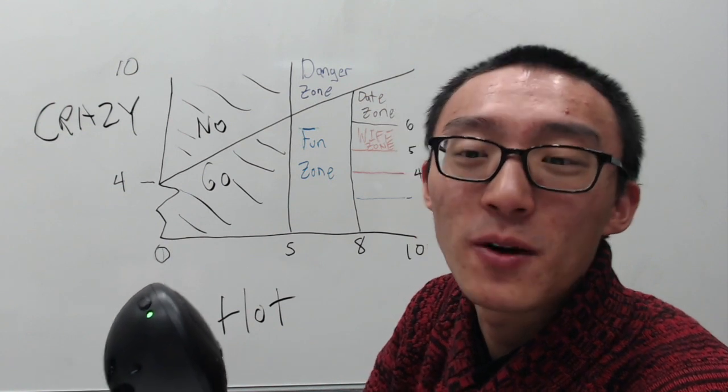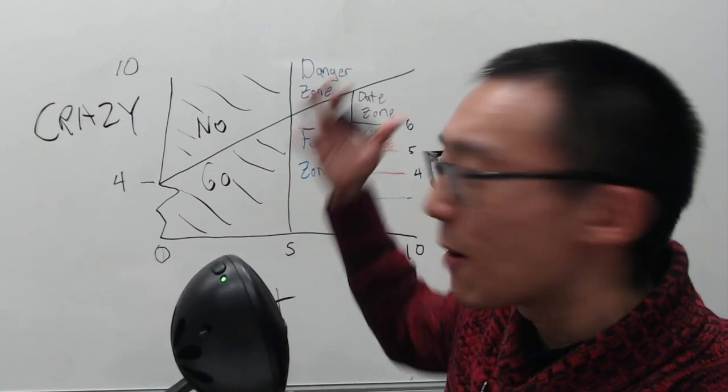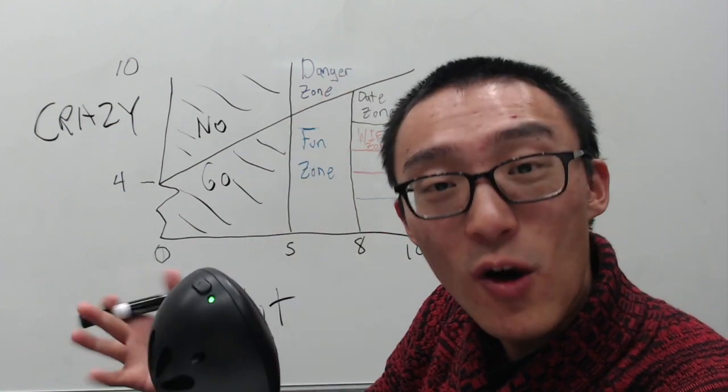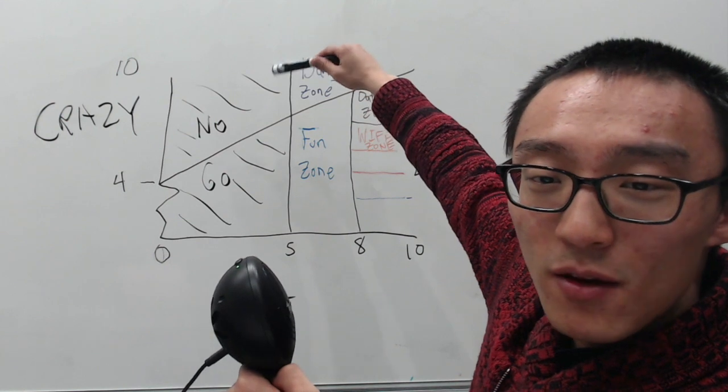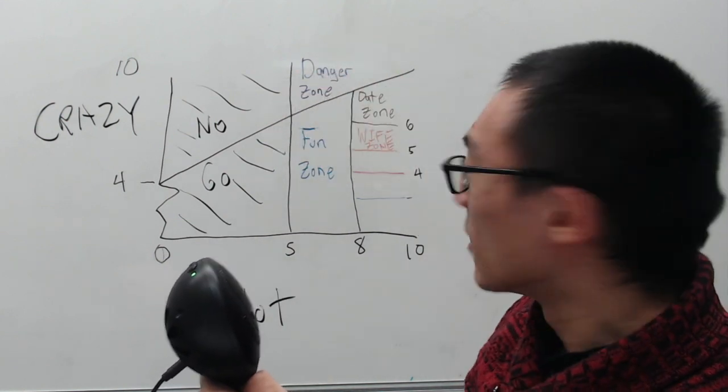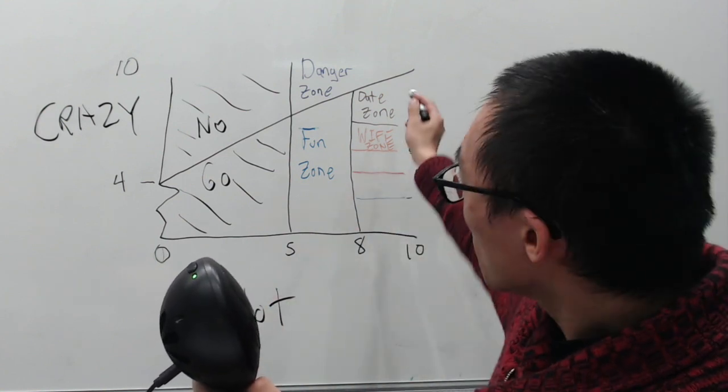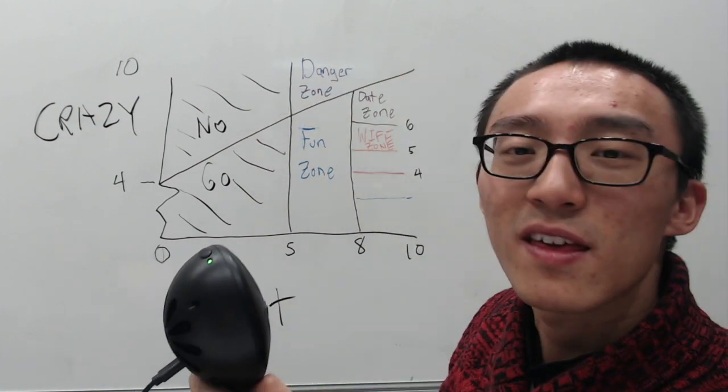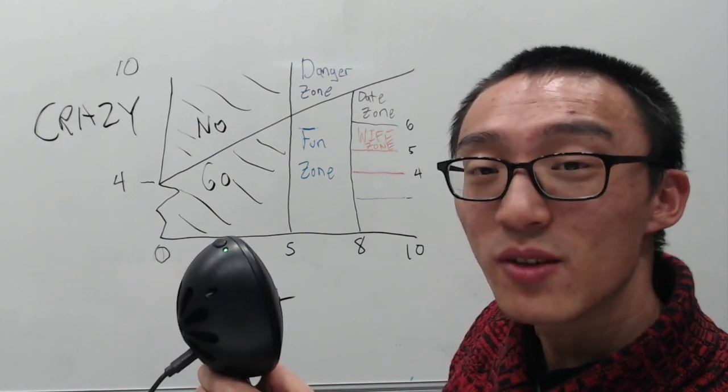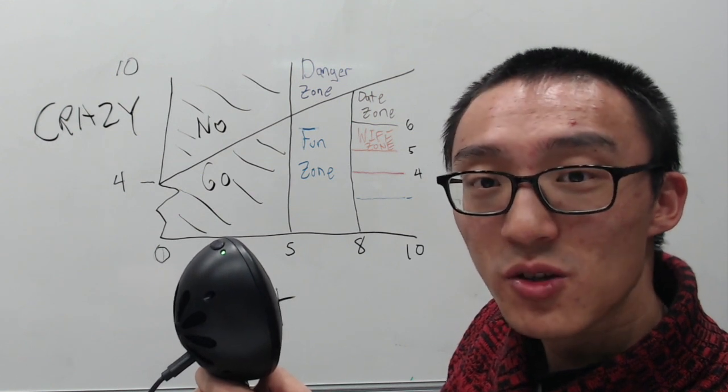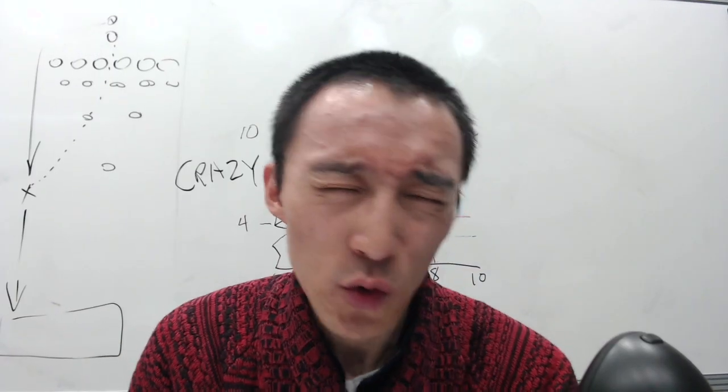So this was the Hot Crazy Matrix and this was my critique and my updates. I thank you guys so much for watching. If you're a man, what type of woman have you normally ended up with? What type of woman do you seek? Did I say anything that was wrong? Am I completely an idiot? If you're a woman, where are you honestly in this? Is there anything else I'm missing? And for everyone else watching, thank you so much. Please press a like, leave a comment, press subscribe. Later I will talk to you guys soon. Highway to the danger zone.